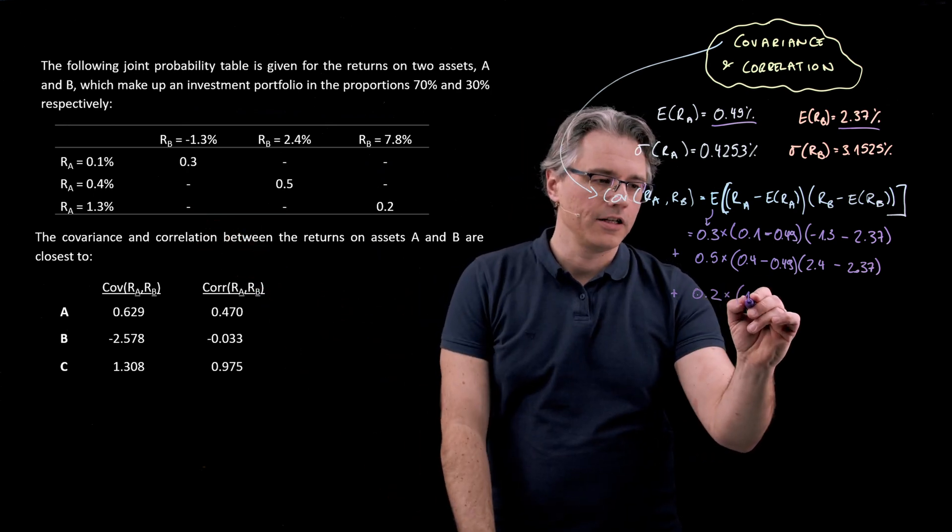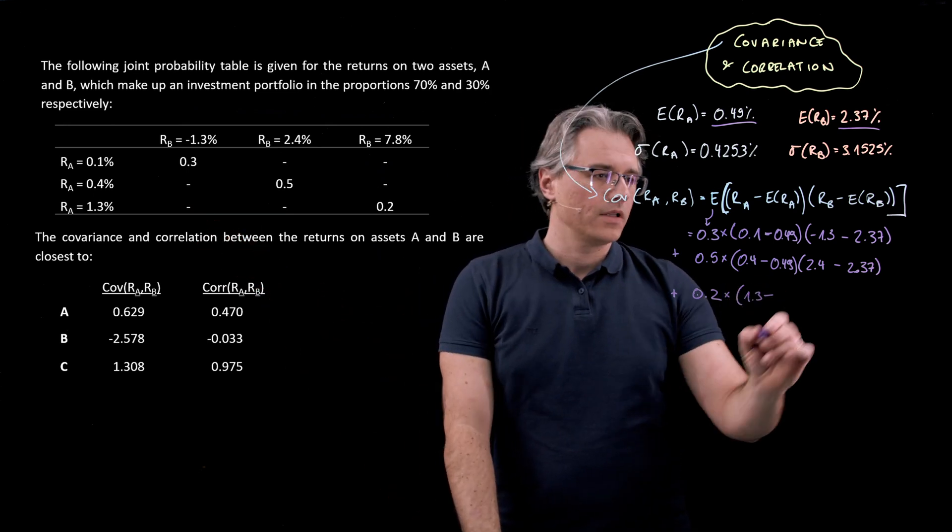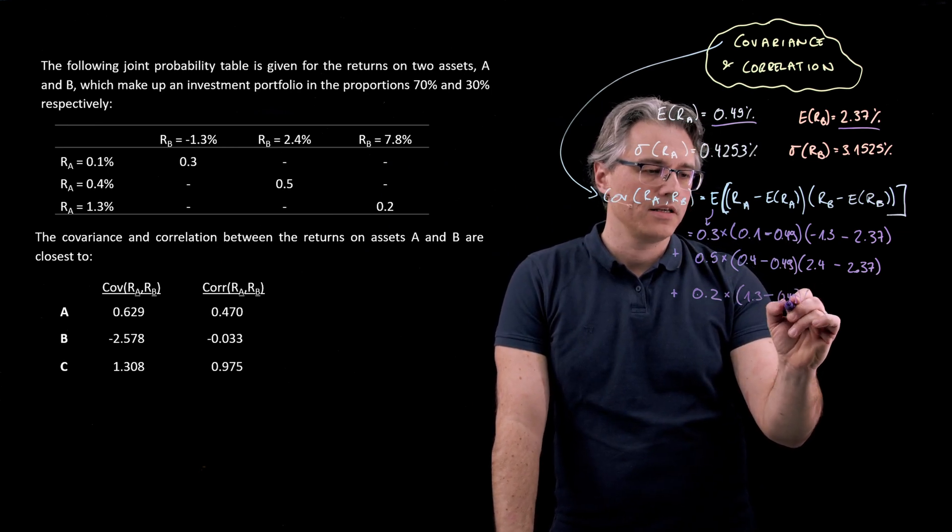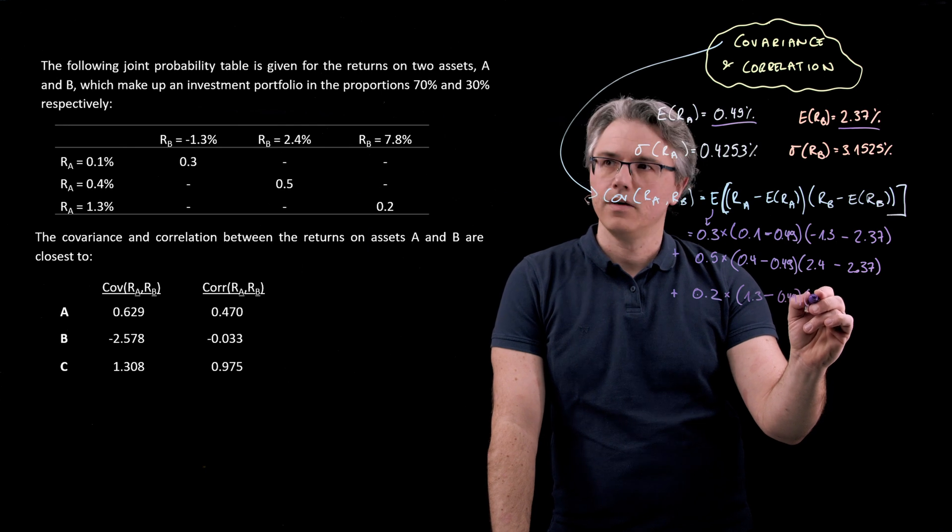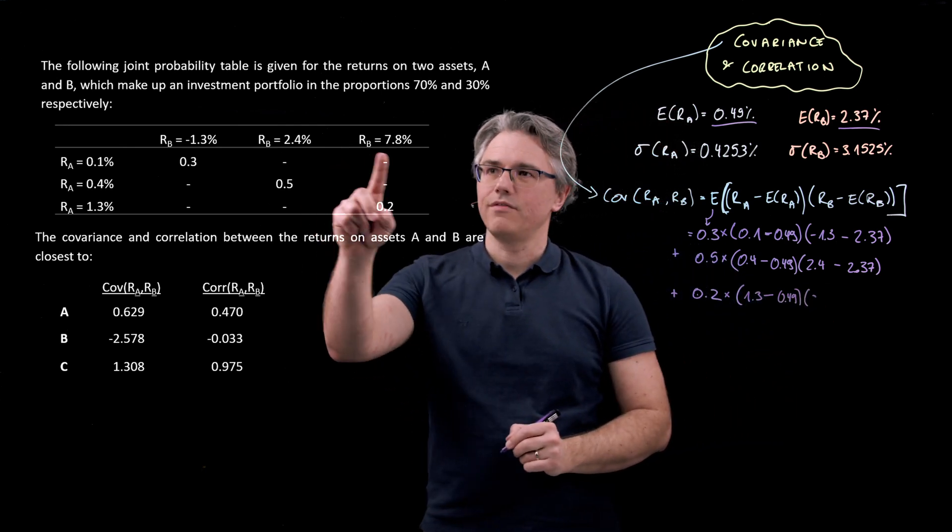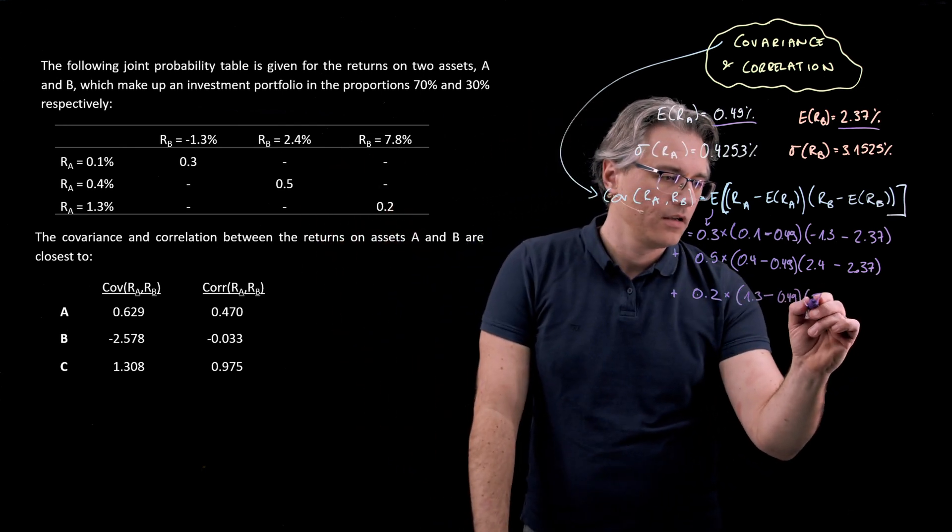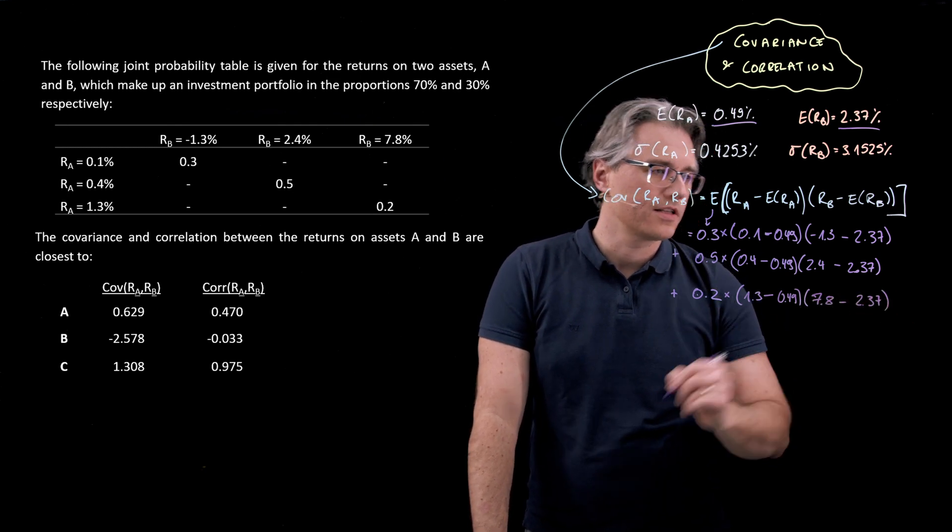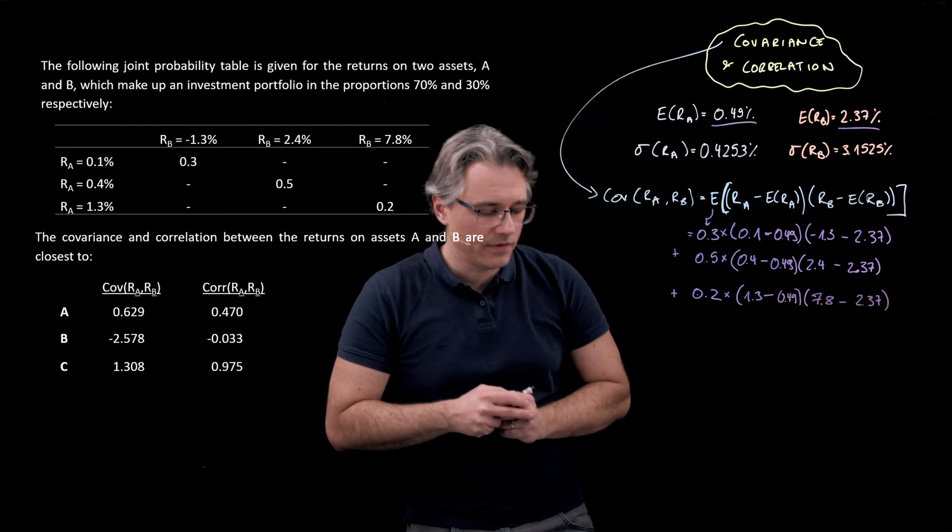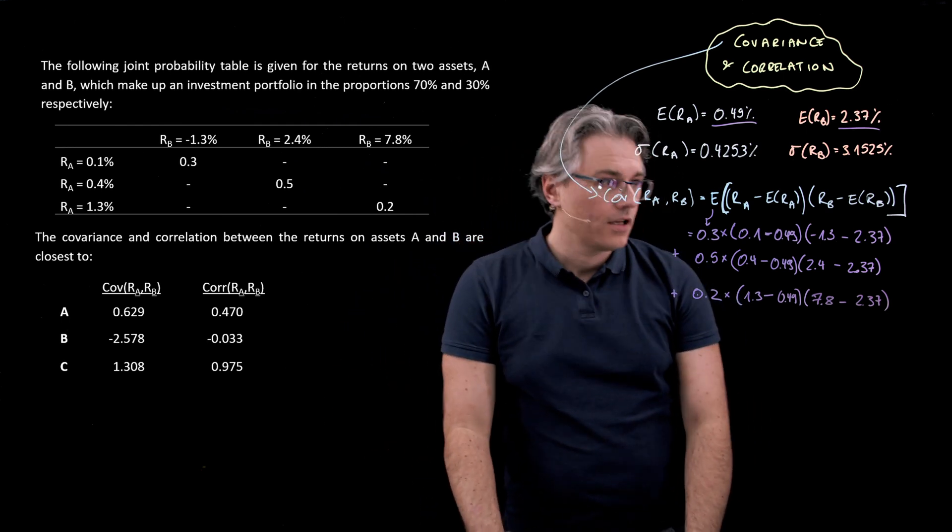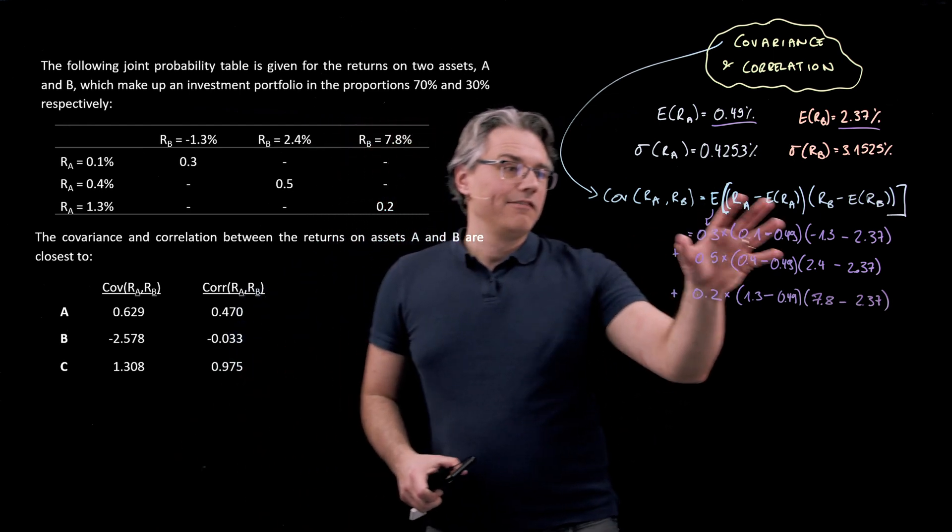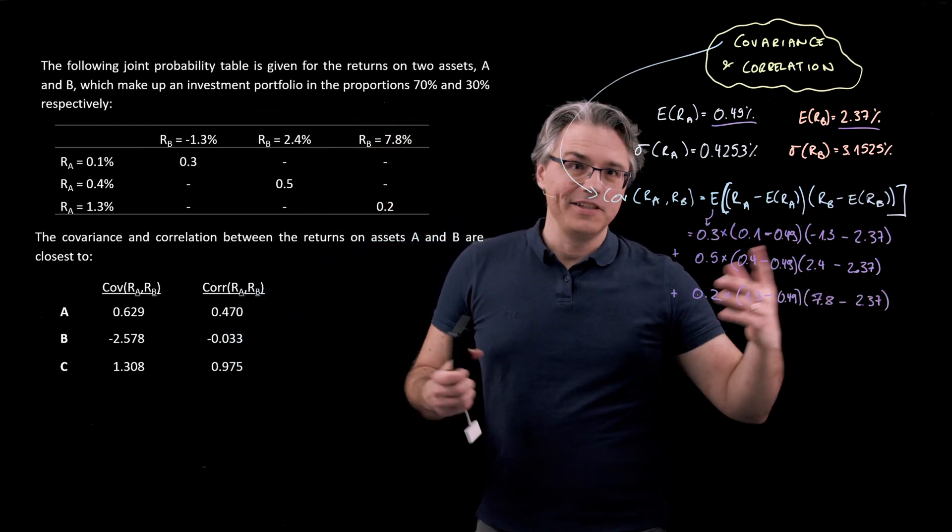0.2 is our final probability here, and with this probability, we've got the following event: A taking on a value of 1.3, minus its expected return, and at the same time, B taking on a value of 7.8, 7.8 minus the same constant expected value, which is 2.37. And covariance is going to be whatever comes out from adding all of these up.